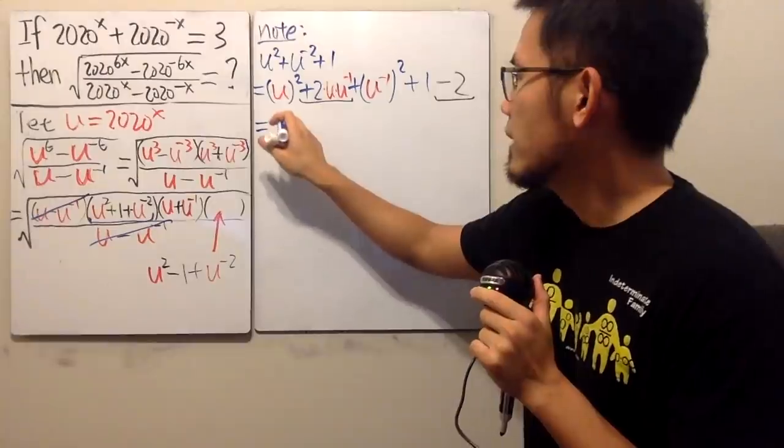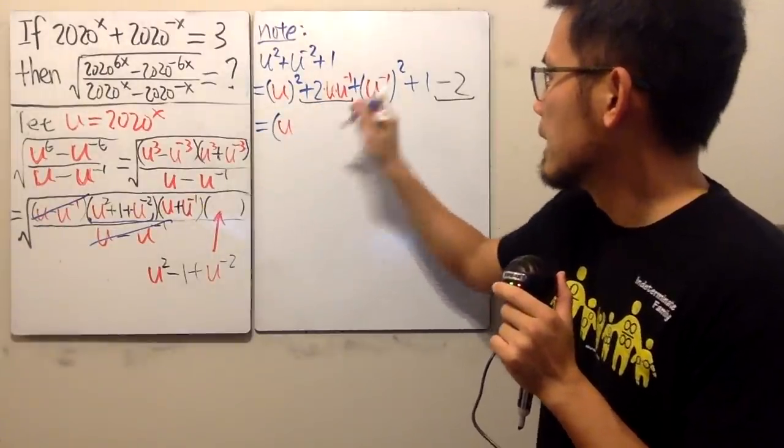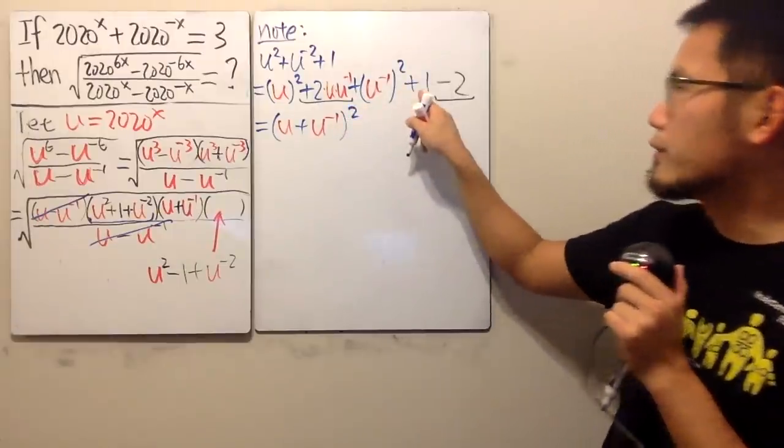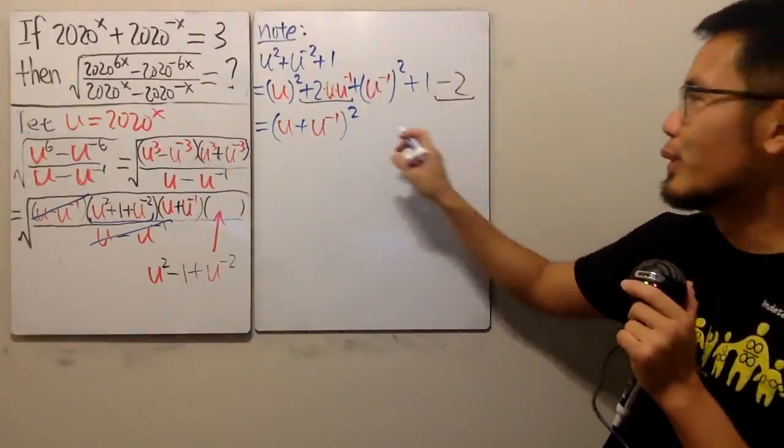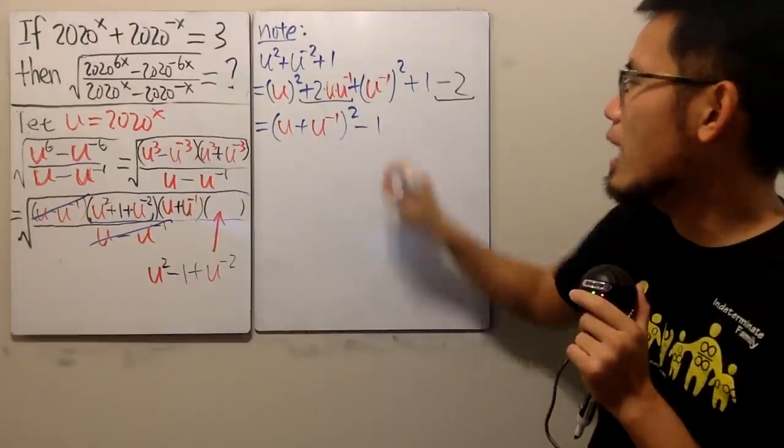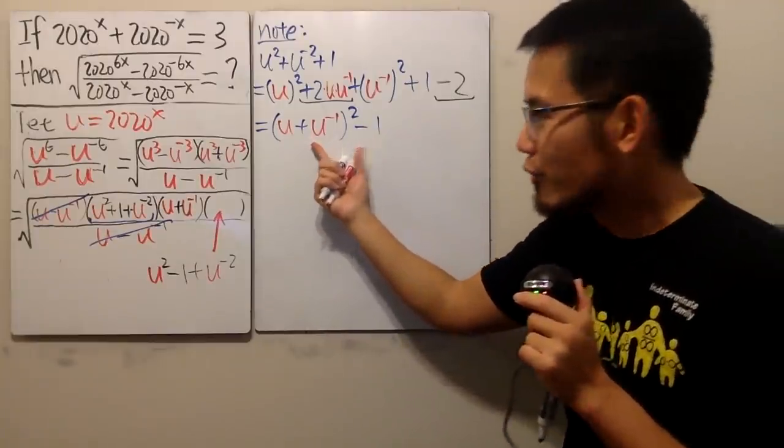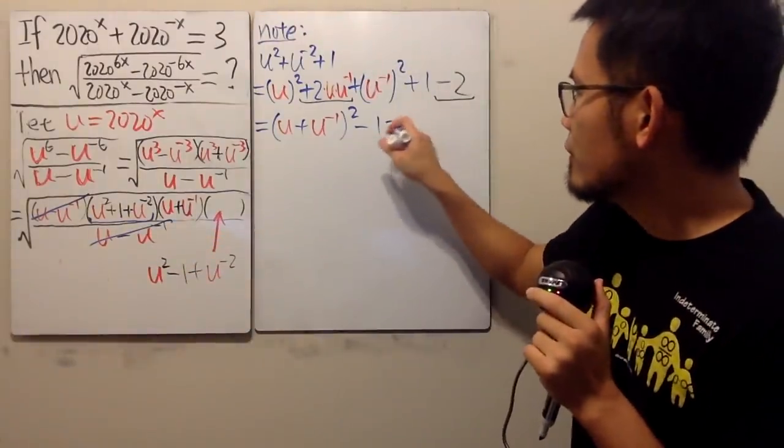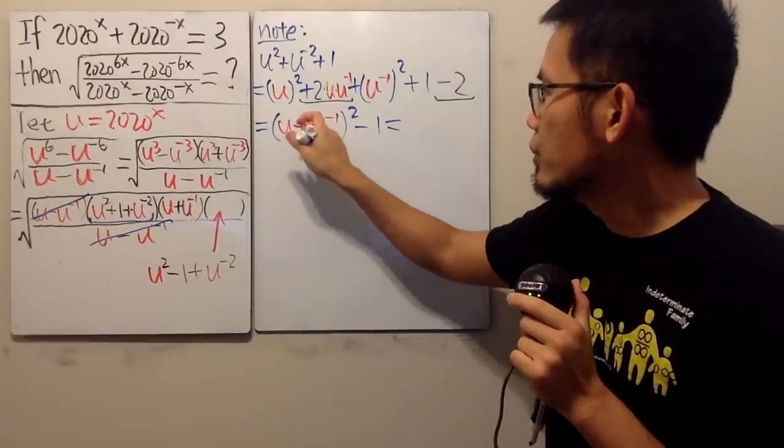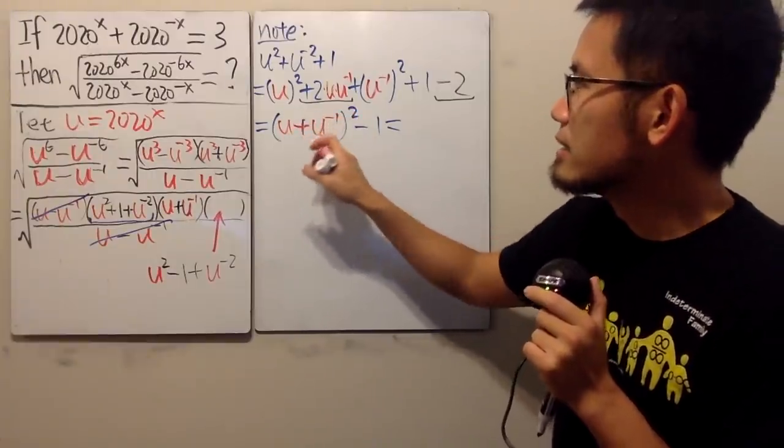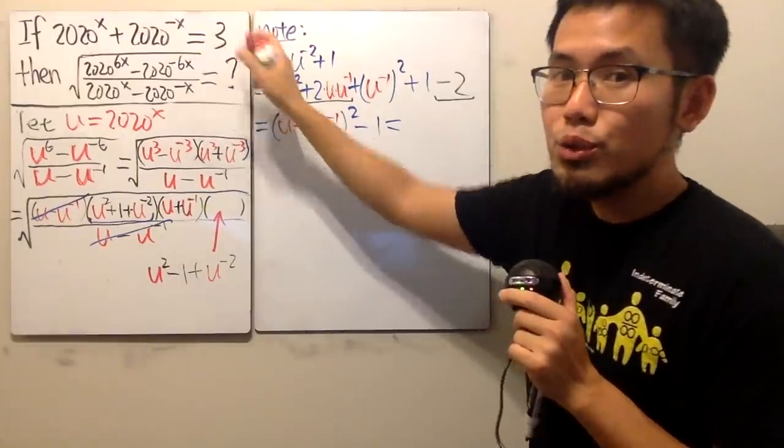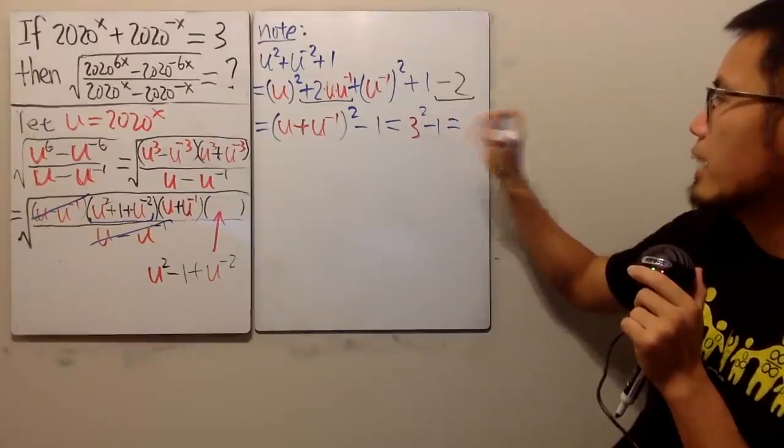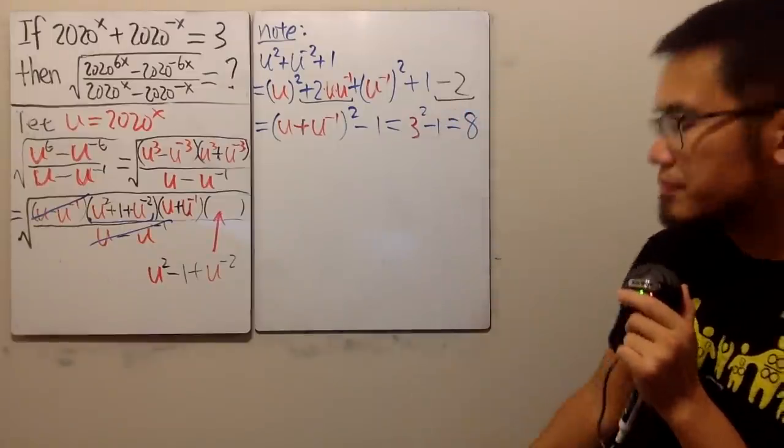These three terms will just give us u plus u to the negative one, and then raised to the second power. And of course, one minus two, we end up with minus one. So this right here is going to be going for that. Better yet, do we know the values? Yes, we do. u plus u to the negative one, this is nicely equal to our equation right here. So this is three squared minus one, and work that out, you get eight. Great.